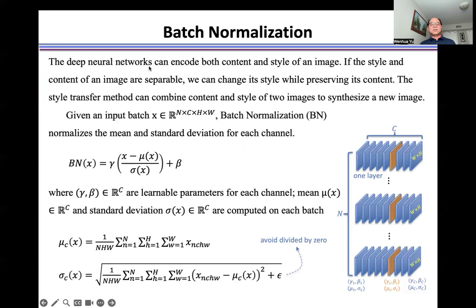Deep neural networks can encode both content and style of an image. If the style and content of an image are separable, we can change its style while preserving its content.